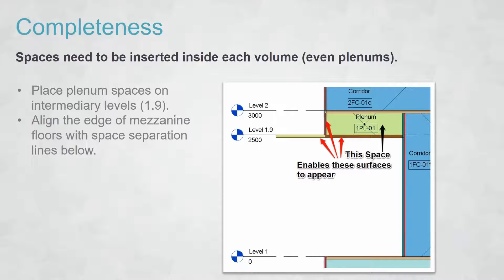For completeness, you need to fill every space or volume with a space object. Sometimes you have plenums or exterior plenums — a shading surface won't appear until there's a space inside it, because that's how the GBXML process recognizes what's around it, what surfaces are adjacent, and how things are adjoined. You may need to create a small intermediate level, add a floor and a wall, put a space in it, and it'll work fine.